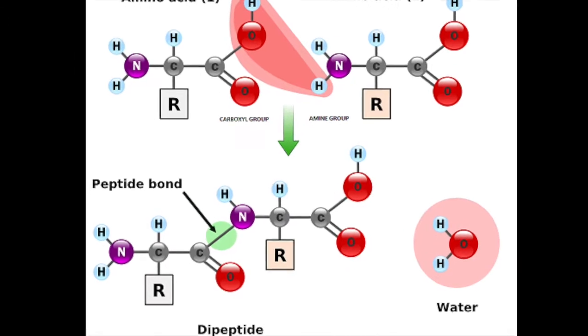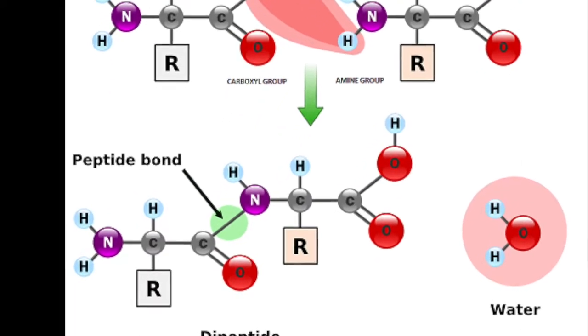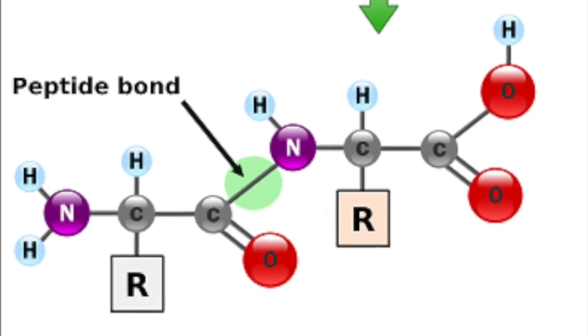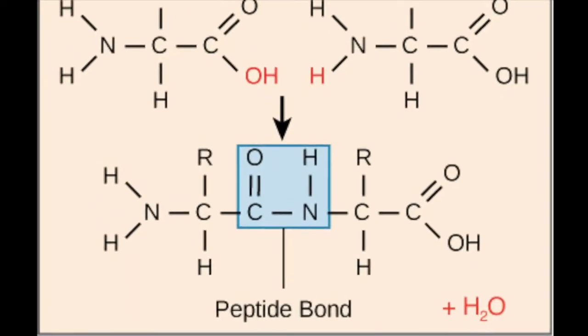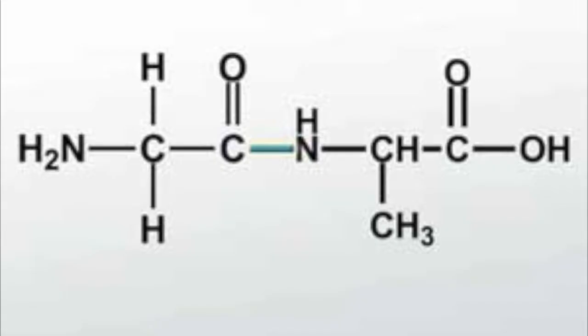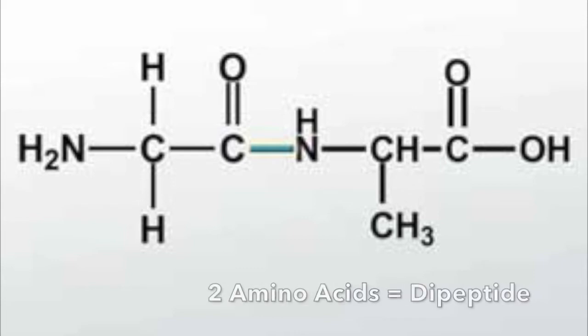During the process of translation, condensation reactions occur between the amine and carboxyl groups of adjacent amino acids. The types of bonds formed are a special type of covalent bond called a peptide bond. When two amino acids are linked by a single peptide bond, the molecule is referred to as a dipeptide.